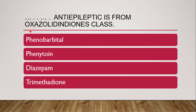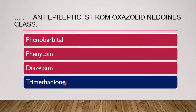Next question: dash anti-epileptic is from the oxazolidinedione class. The oxazolidinedione class is named after the oxazolidine ring. When the oxazolidine ring contains two ketones, it is called oxazolidinedione. The options are phenobarbital, phenytoin, diazepam, or trimethadione. The correct answer is trimethadione — the name itself contains 'dione.'